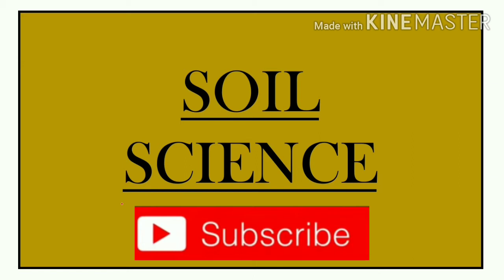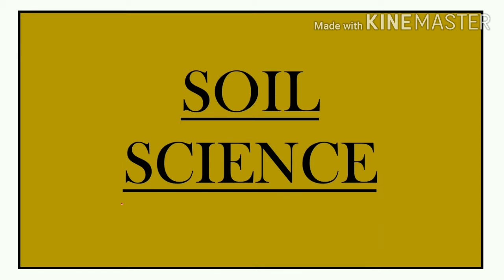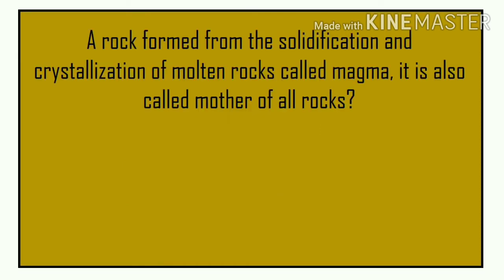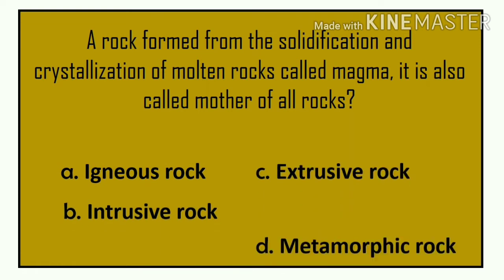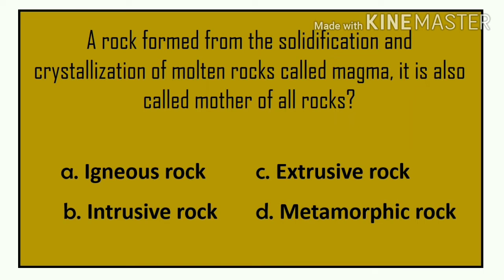Particularly, we will discuss soil genesis as shown in the thumbnail. The question is: a rock formed from the solidification and crystallization of molten rocks called magma — it is also called the mother of all rocks. So what is this kind of rock? The choices are: A) igneous rock, B) intrusive rock, C) extrusive rock, D) metamorphic rock.